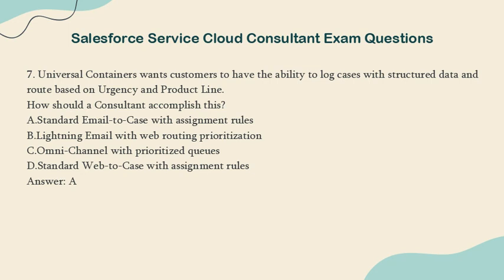Question 7: Universal Containers wants customers to have the ability to log cases with structured data and route based on urgency and product line. How should a consultant accomplish this? A. Standard email to case with assignment rules. B. Lightning email with web routing prioritization. C. Omni-channel with prioritized queues. D. Standard web to case with assignment rules. Answer: A.